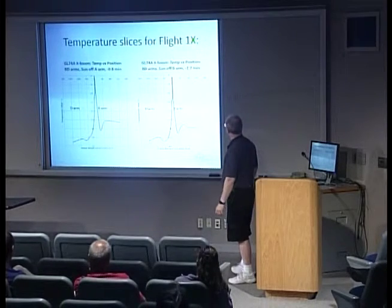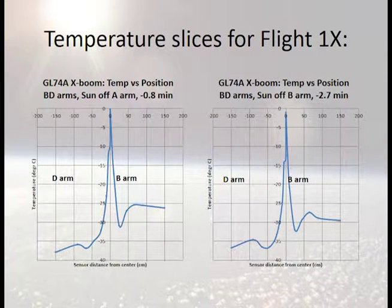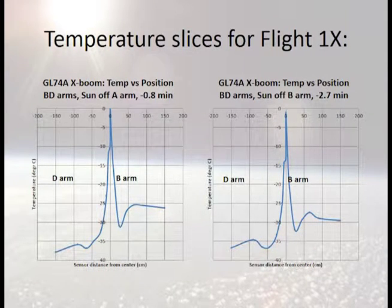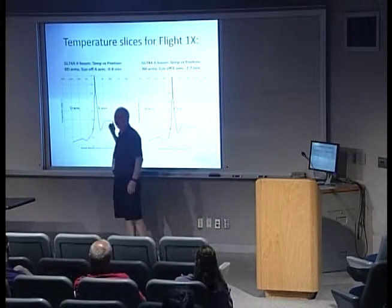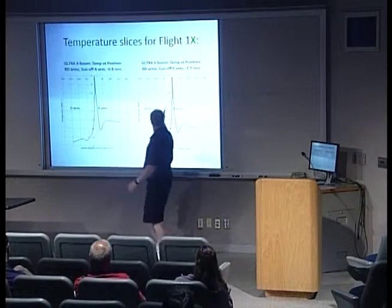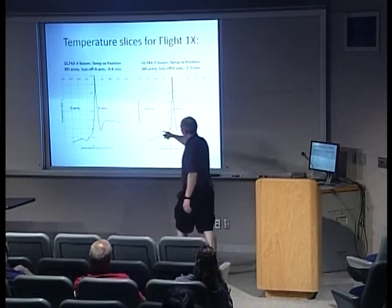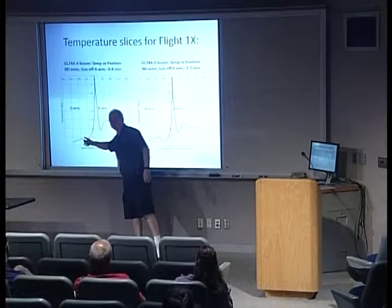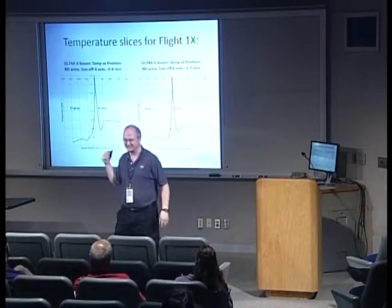Looking through temperature slices: at a moment when the sun was off the B arm, my expectation was asymmetry from B to D — warmer on the B side, colder on the D side, and even temperatures outside the wake. I do notice somewhat warmer on the B side, less warm on the D side, but rather asymmetric outside the wake. At a different moment when the sun was off the A arm, it should be symmetric — but it's still asymmetric B to D. This suggests the asymmetry might be in the sensors rather than the environment. More or less, we didn't see what we were looking for.